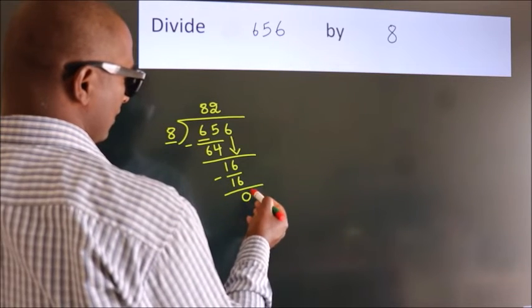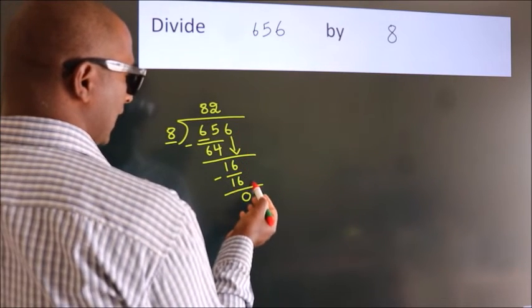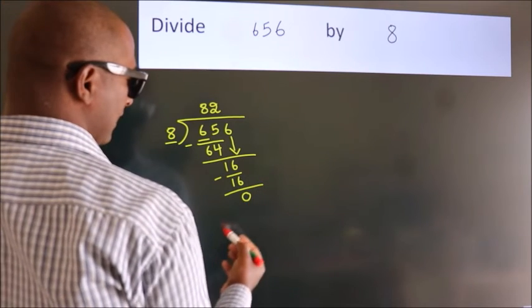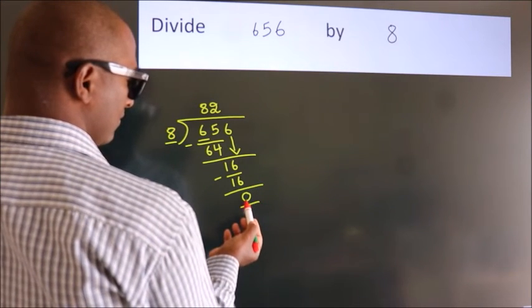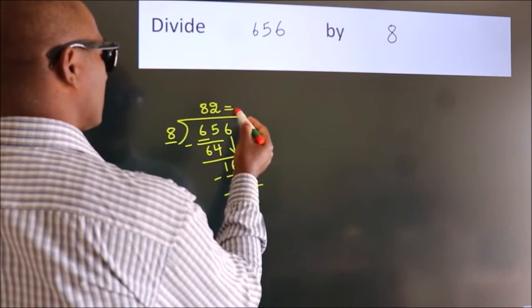After this, no more numbers to bring down. And we got remainder 0. So, this is our quotient.